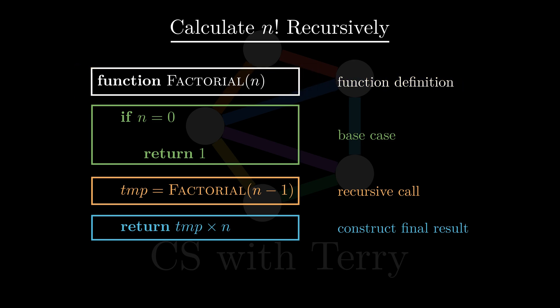In the function definition stage, we need to be clear about what this function is going to do, what its input parameters are, what kind of tasks we want it to accomplish, and what its return value is. For the factorial function, its input parameter is n. We hope it can calculate n factorial and return the result.